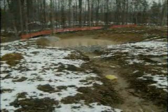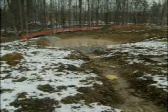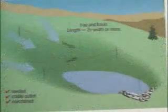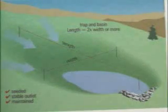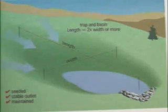Sediment traps are temporary ponds with simple outlet structures. Traps are most often located at the end of drainage swales and in perimeter areas. A typical outlet consists of a dam made of heavy rock that is overlain with number 57 stone. Lengths, widths, and depths of all sediment traps must be specified in the site's plan.